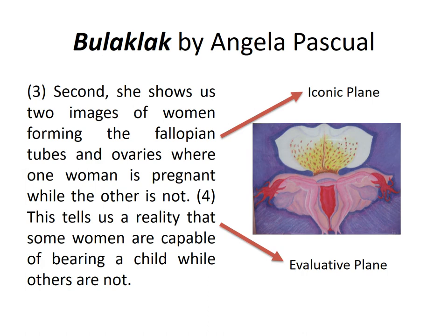Second, he shows us two images of women forming the fallopian tubes and ovaries, where one woman is pregnant while the other is not. This tells us a reality that some women are capable of bearing a child while others are not. The third sentence is an example of iconic plane — I focused on the images of the women holding hands and the representation of the fallopian tubes and ovaries. The fourth sentence is evaluative plane — I am looking into a social issue: that there are women who are blessed with having children, while others are not capable of having children.